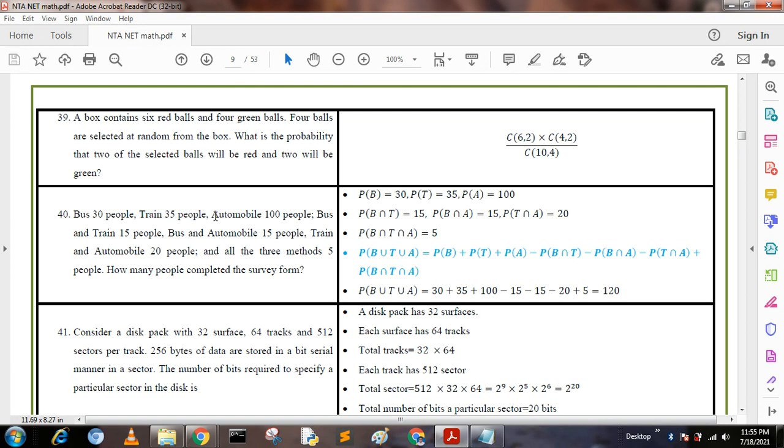Question 40: Bus 30 people, train 35 people, automobiles 100 people, bus and train 15 people, bus and automobiles 15 people, train and automobiles 20 people, and all three methods 5 people. How many people completed the survey? We write: P(B) = 30, P(T) = 35, P(A) = 100, P(B∩T) = 15, P(B∩A) = 15, P(T∩A) = 20, P(B∩T∩A) = 5.